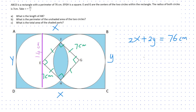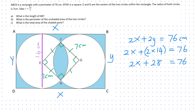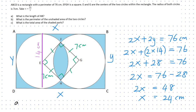The radius of a circle is 7 centimeters, so the diameter would be 14 centimeters. It is interesting to note that the diameter of the circle is equal to the breadth of the rectangle. Therefore y equals 14 centimeters. Substituting y equals 14 into the equation, the answer to question A — the value of x — is 24 centimeters.